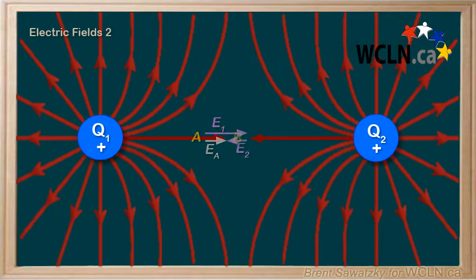Consider point B right in the middle of these two charges. Thus the electric field from each charge would be equal in magnitude but opposite in direction.